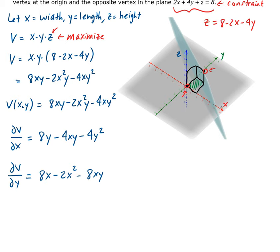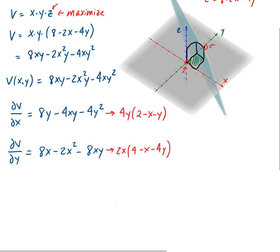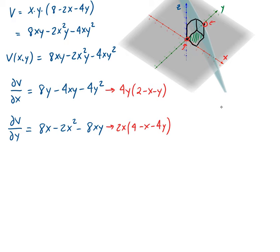So now we have our two equations. We can simplify these a bit more. The first one, we can factor out 4y, leaving us with 4y(2 − x − y). The second one, we can factor out 2x, leaving us with 2x(4 − x − 4y). Now let's set both of these equal to zero: 4y(2 − x − y) = 0 and 2x(4 − x − 4y) = 0.